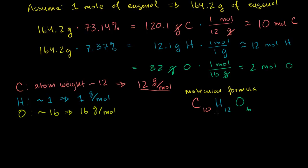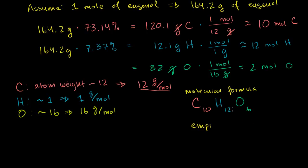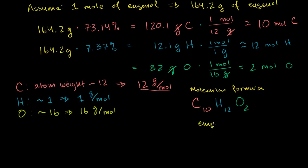The empirical formula is essentially this ratio reduced to its simplest terms. All of these numbers — 10, 12, and 2 — share a common factor of 2. So we divide all of them by 2: we get 5 carbons, 6 hydrogens, and 1 oxygen. The empirical formula is C₅H₆O, and we're done.